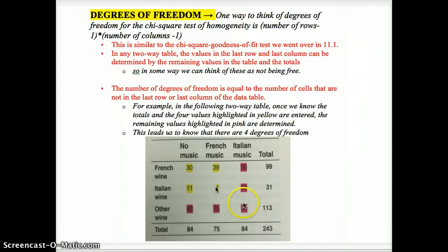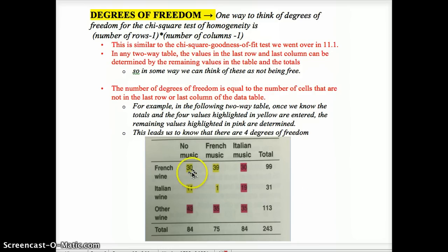Degrees of freedom tend to be a challenge here. Let's take a look at why it's the number of rows minus one times the number of columns minus one. Essentially, when we look at this table, here we have three values of each variable. If we know these values in yellow and we have our total, then we know exactly what this other value is, the third value. Because 30 plus 39 is 69, this value must be 30 to add to 99. Because 11 plus 1 is 12 and we have a total of 31, this must be 19. So essentially we're saying this column is determined by the totals and the other two values, and this row is determined by the totals and the two numbers above it.